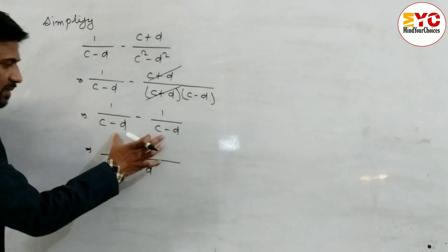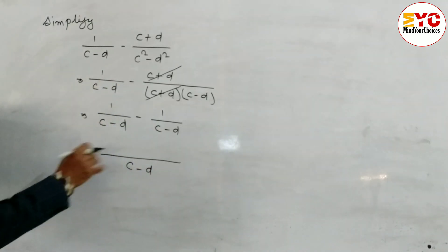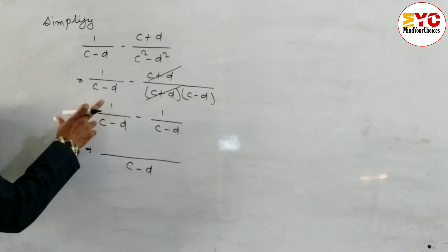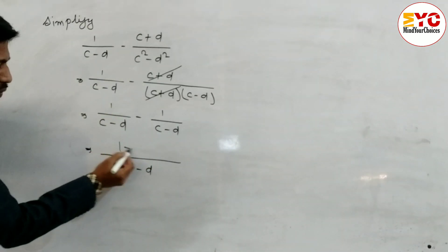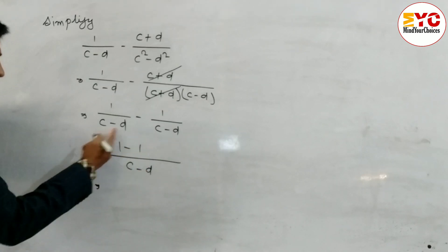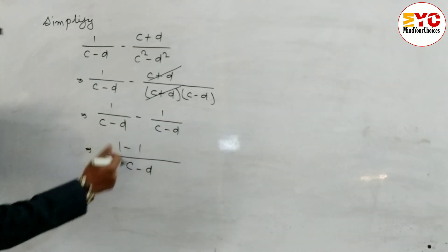When the denominator is same, simply write down 1 minus 1 only. In the numerator we have to write down 1 minus 1 if denominator is same. If not same we have to divide and multiply.